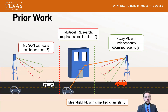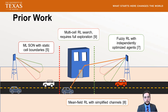There have been a couple of algorithms proposed for this. For example, a machine learning based self-organizing network relied on static cell boundaries, which is problematic because as beams shift from green to red, the boundary between the two should also shift. Additionally, fuzzy reinforcement learning was used, but this used independently optimized agents, which doesn't allow other agents to know what is being changed, so their configuration cannot accommodate these changes as easily.